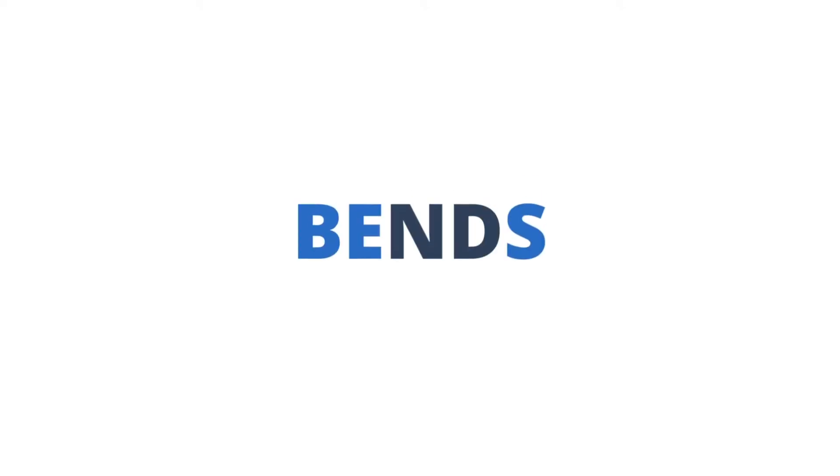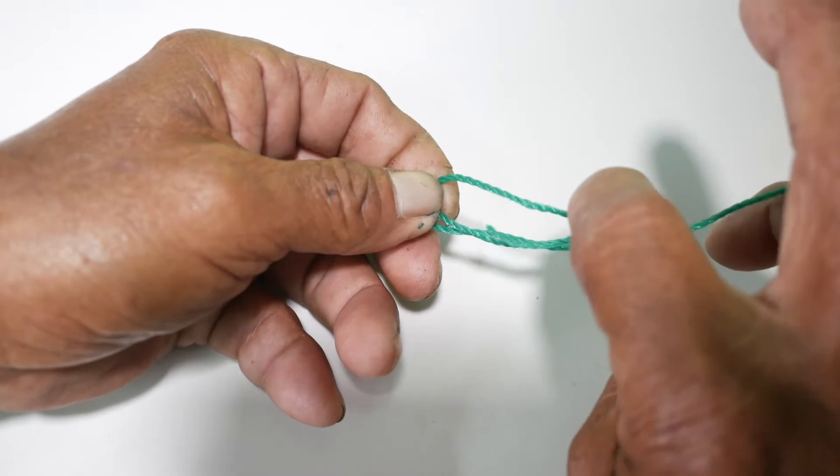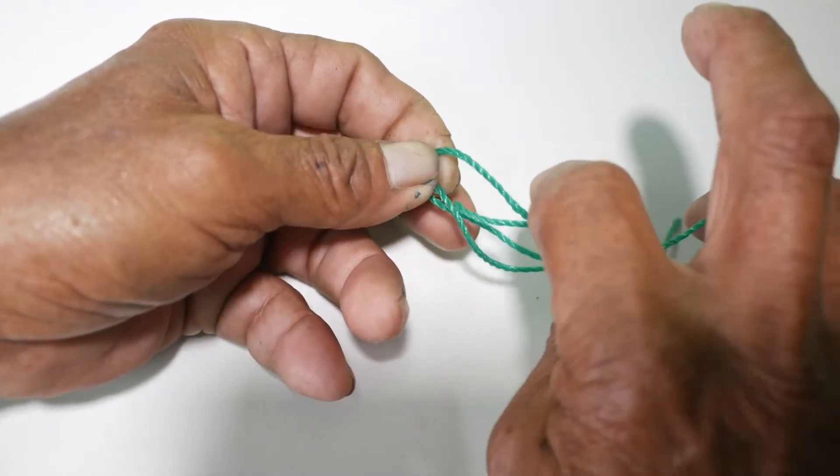With the stopper knots done, we will discuss the bends next. Bends are used to join two ropes to extend its length. Sheet bend is used to join lines of unequal diameters. This is also used in traditional fishing net construction, which will be discussed later.